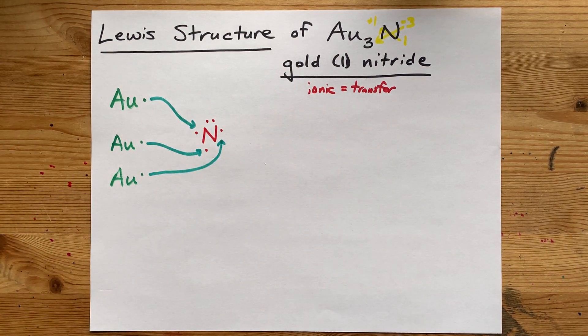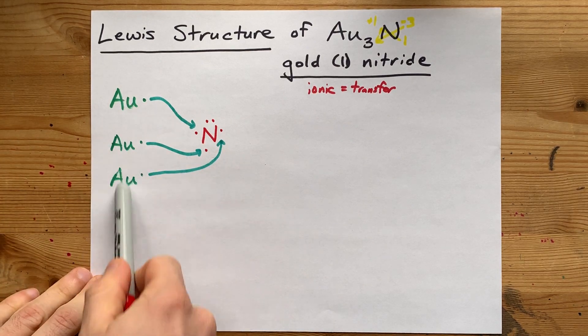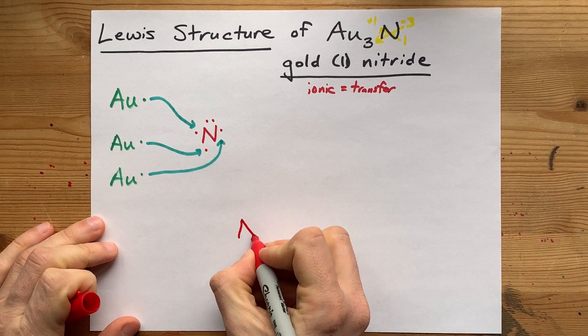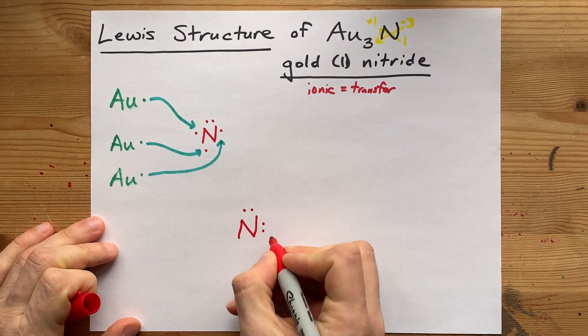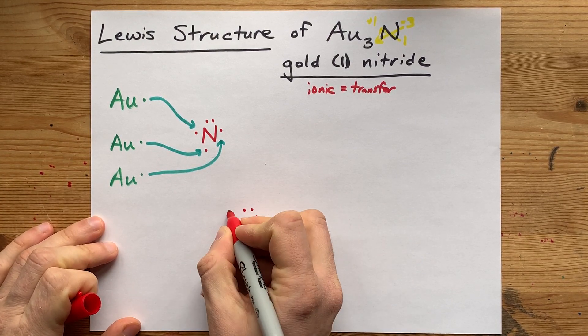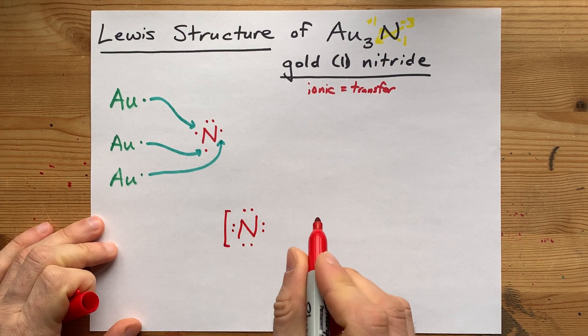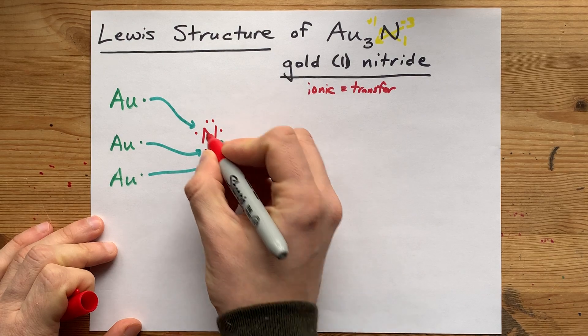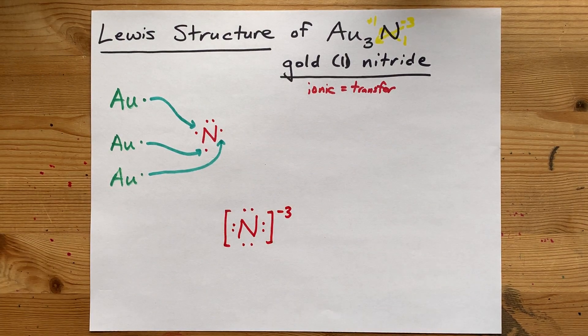Now, nitrogen has eight electrons, and all it took was stripping three gold atoms of their one electron each. The final Lewis structure here has nitrogen with eight electrons around it. That's a full octet. And that is three more electrons than it brought, so it's a minus three charge.